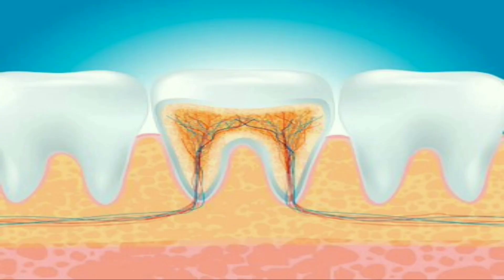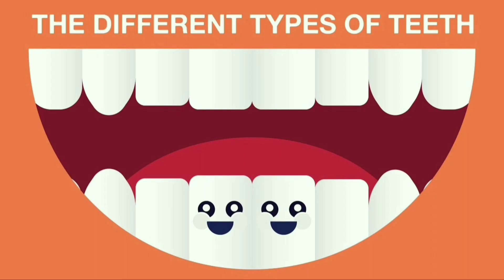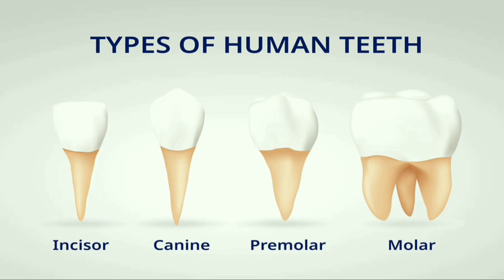Each tooth is rooted in a separate socket in the gums. There are different types of teeth: incisors, canines, premolars and molars.